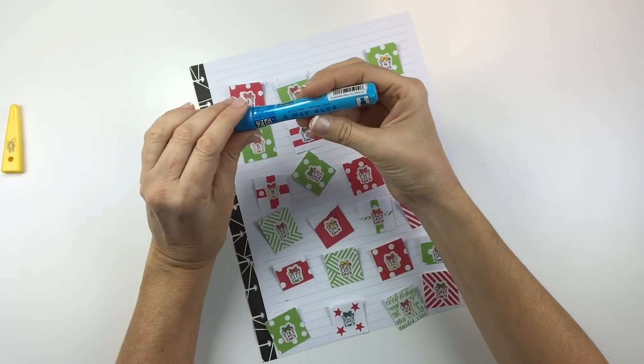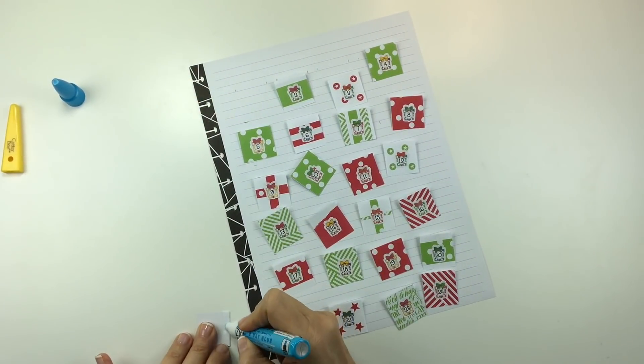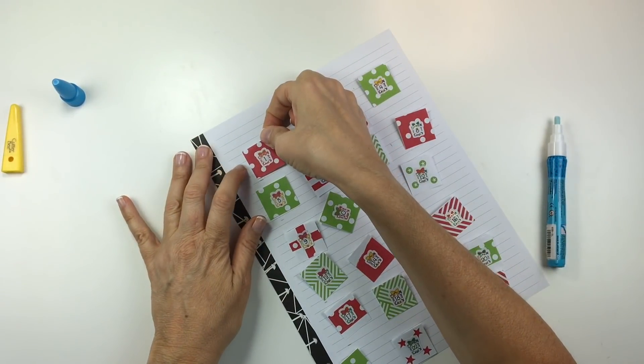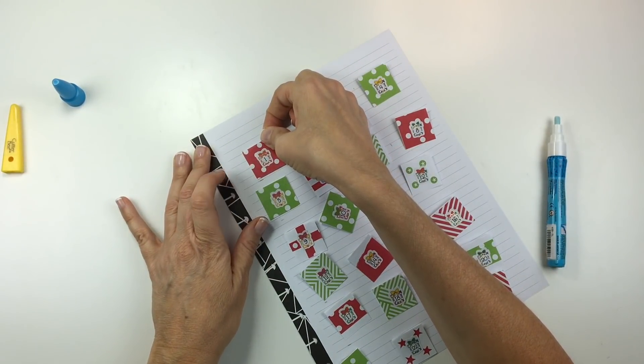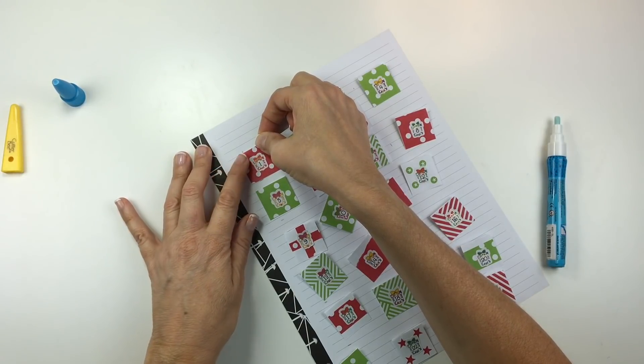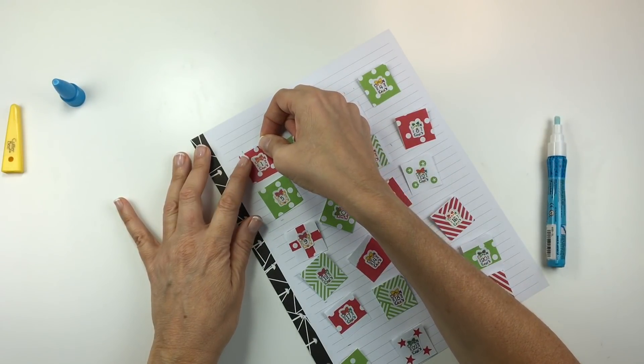Now it's time to glue the squares down onto the paper and I'm using this Zig glue pen and I'll link this in the description box below with all the other supplies that I always put down there. Really like this pen, it's easy because the tip is really small so you can get in small spaces, so I'm just going to glue them all down.